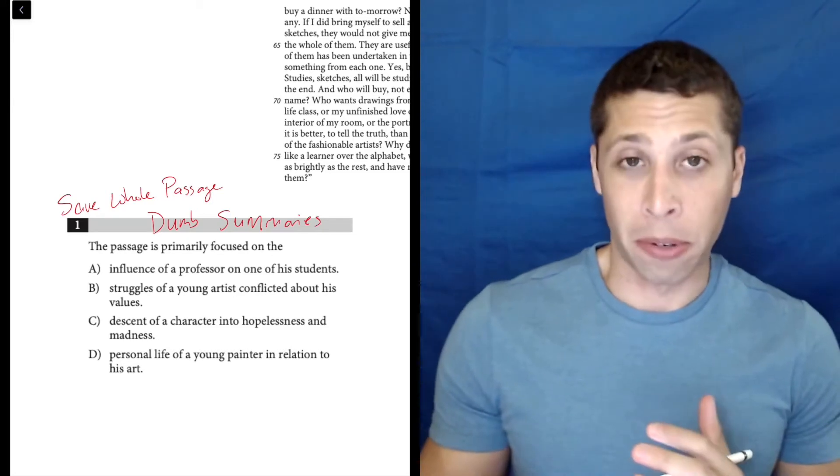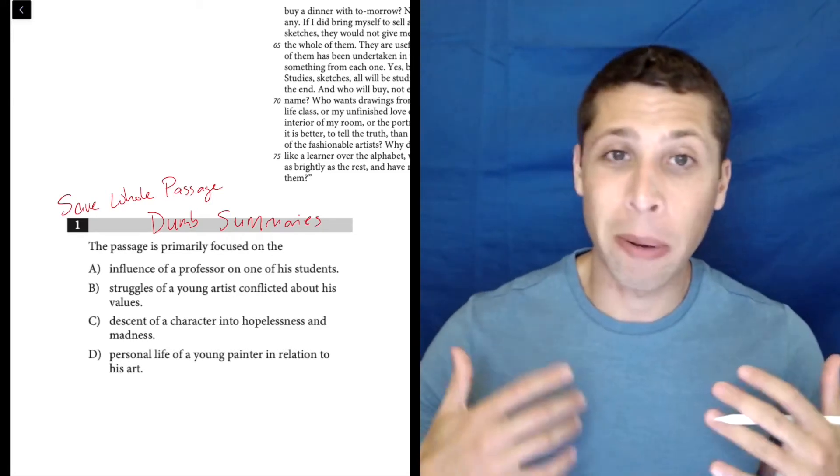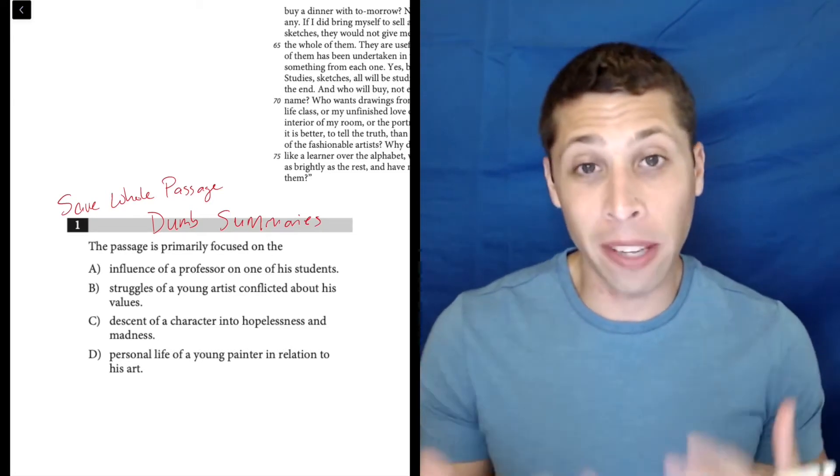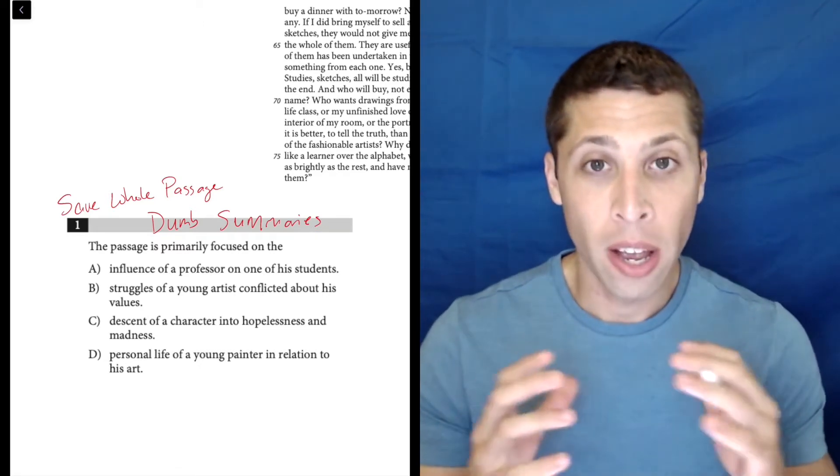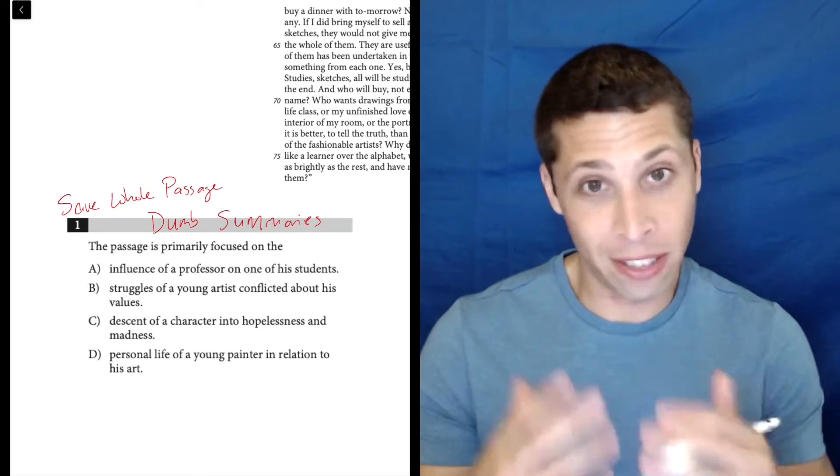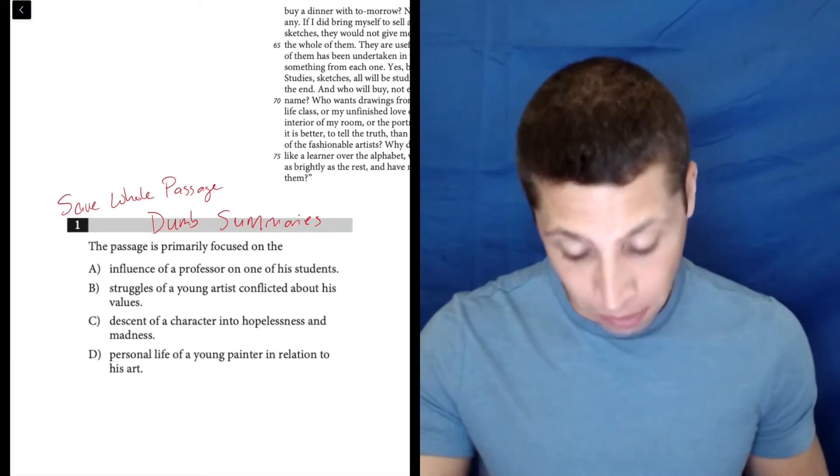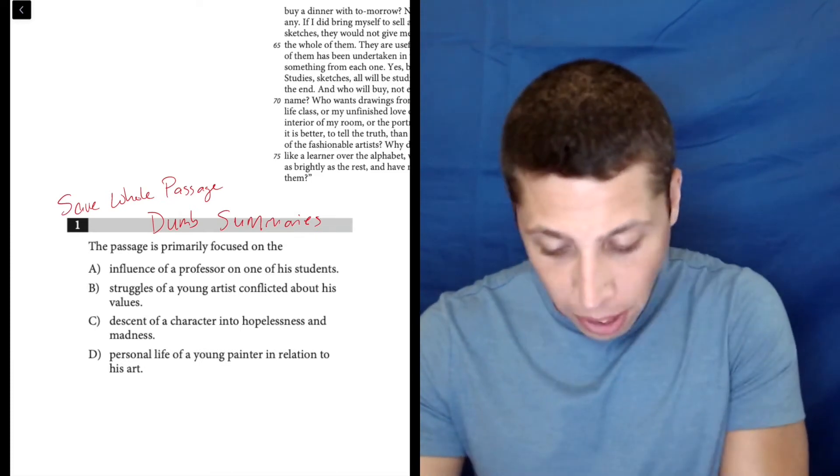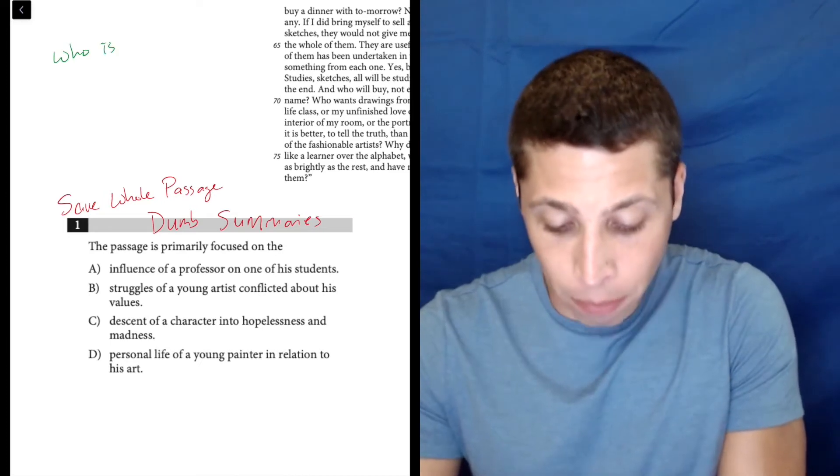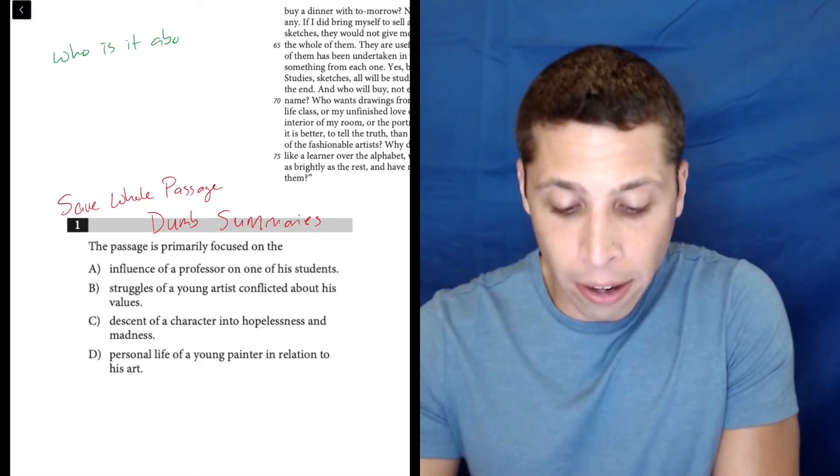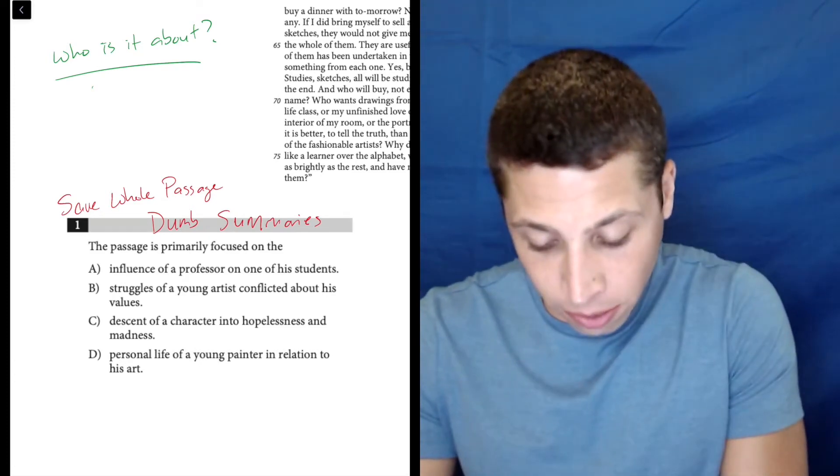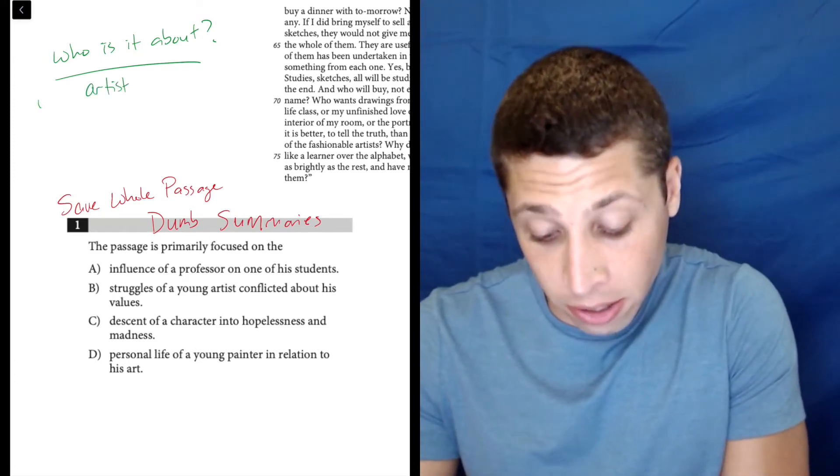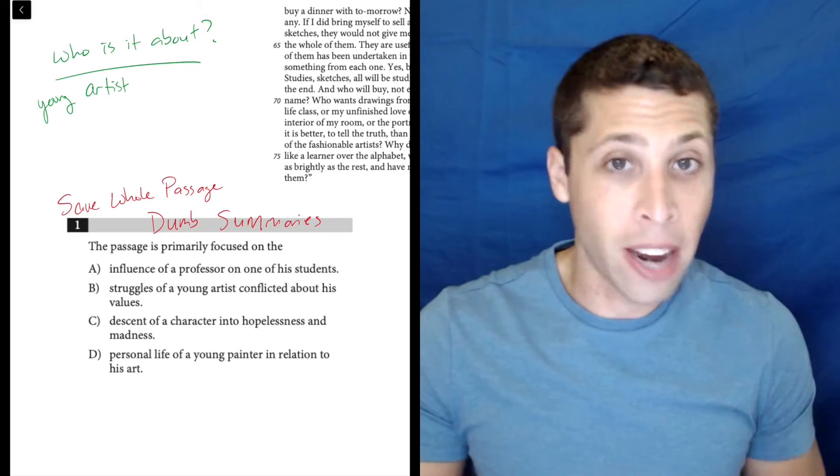There are different kinds of dumb summaries depending on the kind of passage, the kind of question, and even within this question we can use a couple different types to help us. So one thing is, with the literature passage in particular, ask yourself: who is it about? Who's the main character? In this case, it's the artist. The young artist is the main character.